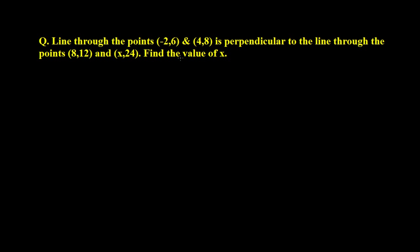Based on the concept of slope of a line, we have a question here. A line through the points (-2, 6) and (4, 8) is perpendicular to the line through the points (8, 12) and (x, 24). We need to find the value of x.